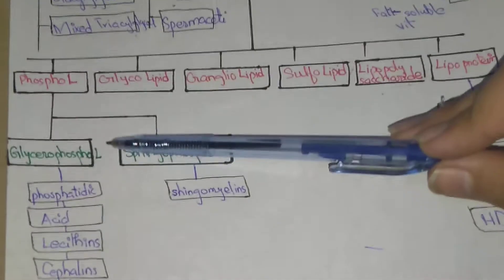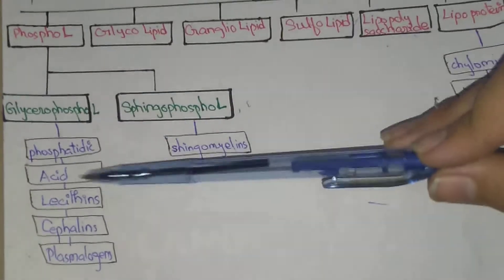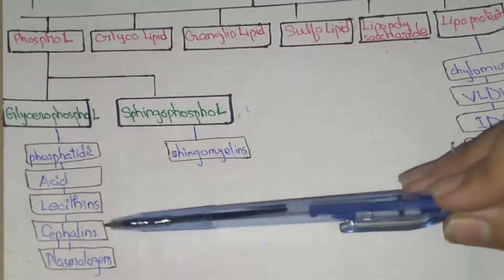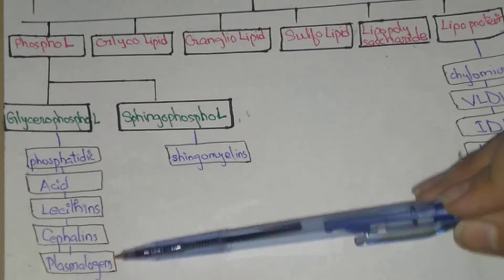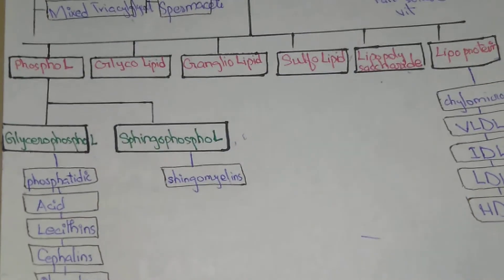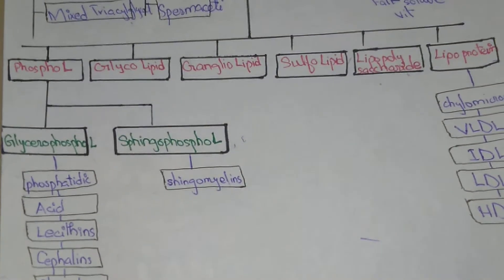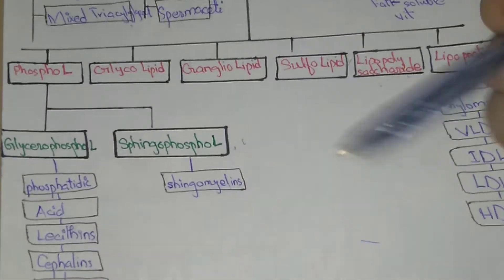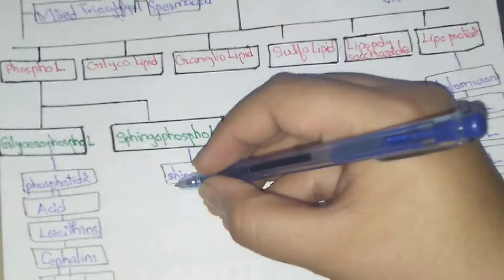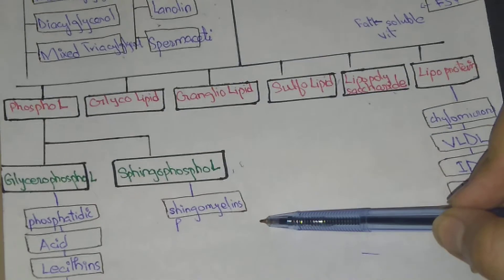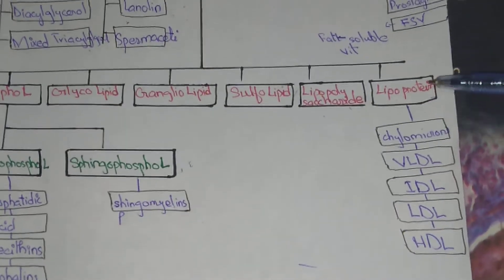Phospholipids are further classified into two types: glycerophospholipids and sphingophospholipids. Glycerophospholipids are further classified into four types: phosphatidic acid, lecithin, cephalin, and plasmalogen. Sphingophospholipids have only one subdivision, which is called sphingomyelin.